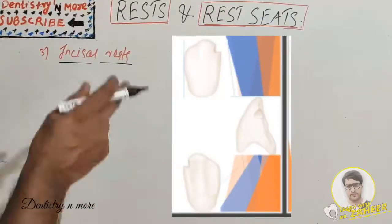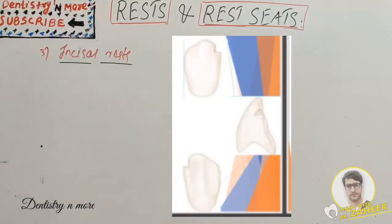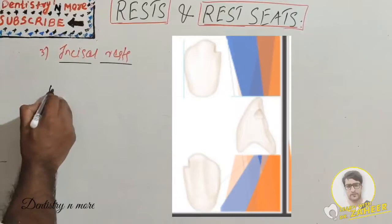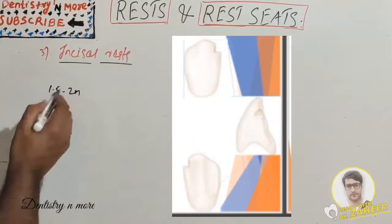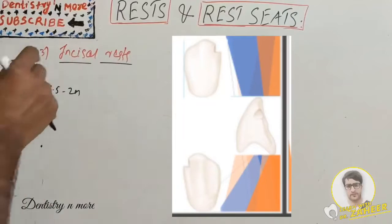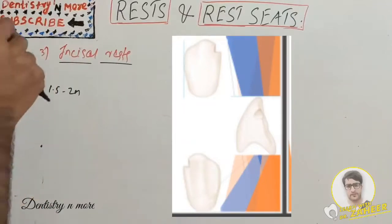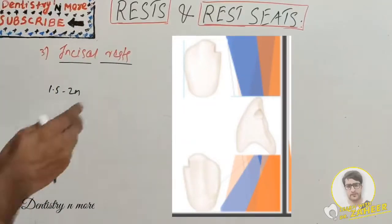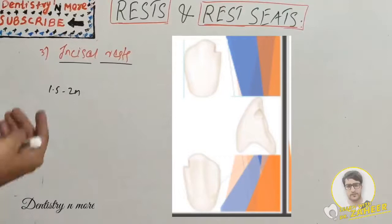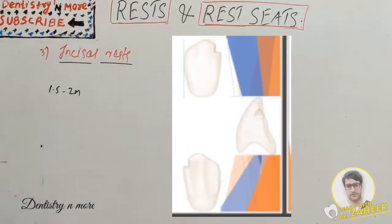The lingual view shows that all borders of the rest seat are rounded to avoid any sharp line angles. The incisal rest seat should appear as a small V-shaped notch located approximately 1.5 to 2 mm from the proximal incisal angle. The deepest part of the preparation should be toward the center of the tooth mesiodistally. The notch should be rounded and extend slightly onto the facial surface to provide a positive seat for the rest.